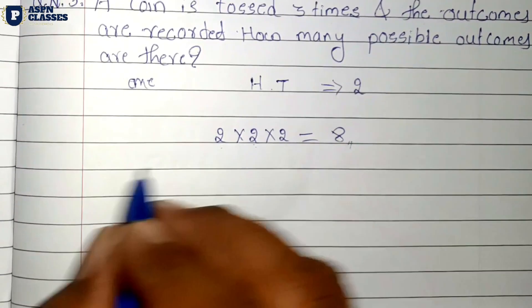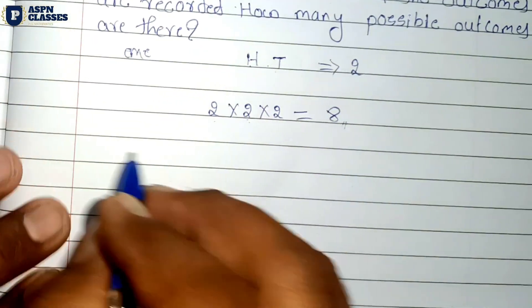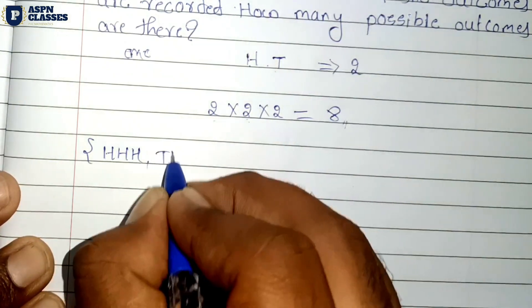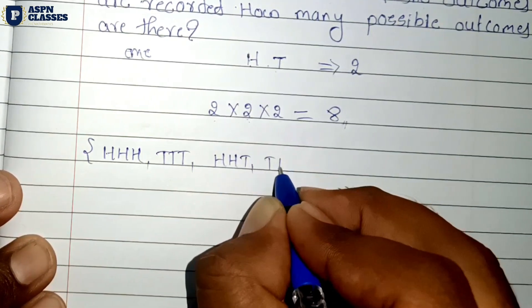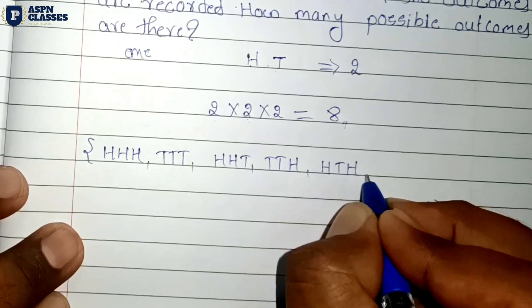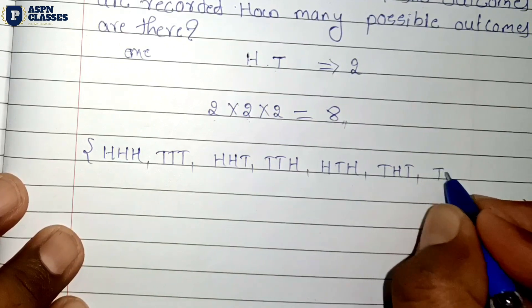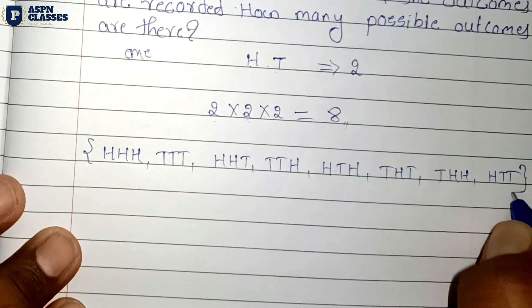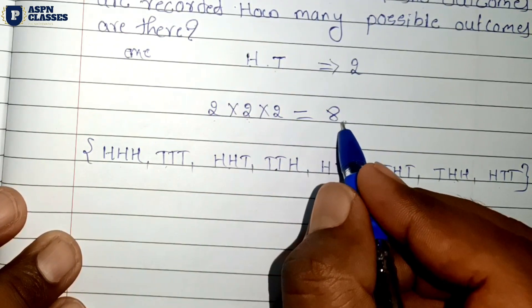By the multiplication principle, the total possibilities are 2 into 2 into 2 equals 8. The 8 possible outcomes are: HHH, HHT, HTH, HTT, THH, THT, TTH, TTT — all 8 possibilities.